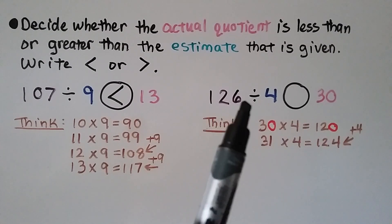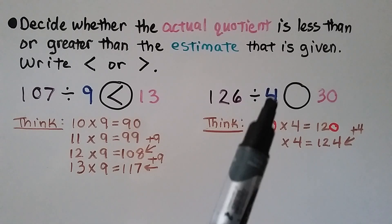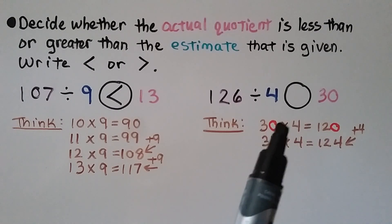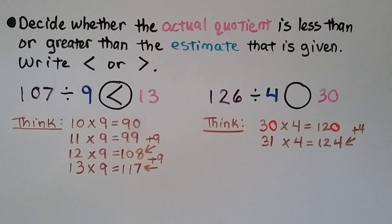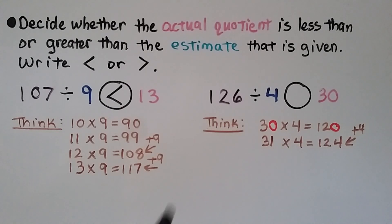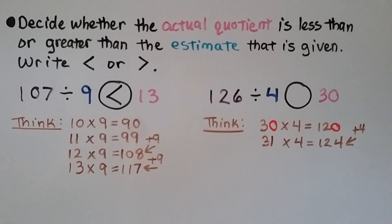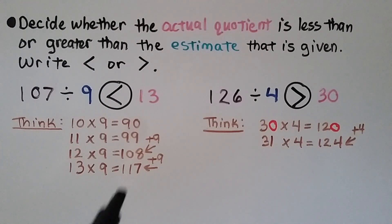For this one we have 126 divided by 4, with an estimate of 30. 10 times 4 is only 40, but we can look at the basic fact: 3 times 4 is 12, and with a zero in the factor, there's a zero in the product, so 30 times 4 is 120. If we add 4 more, 31 times 4 is 124. But we have 126 — our dividend is greater than 31 times 4, so we know it's definitely greater than 30. It helps to make a list of multiples and facts to answer problems like these.